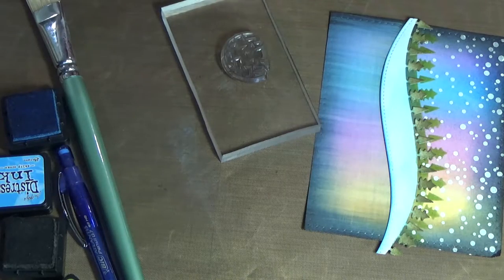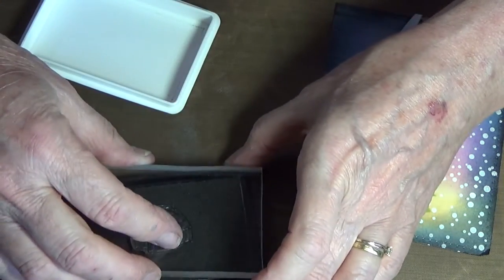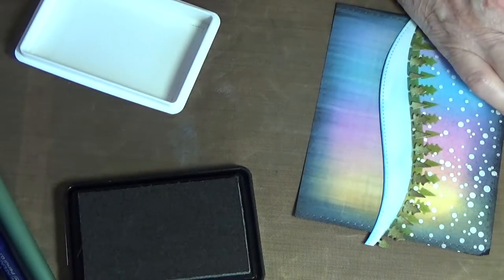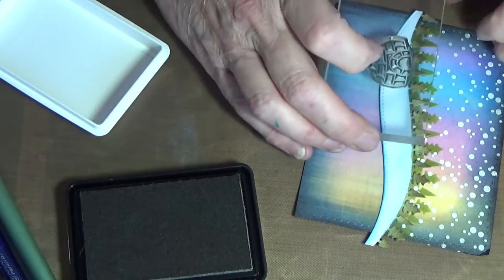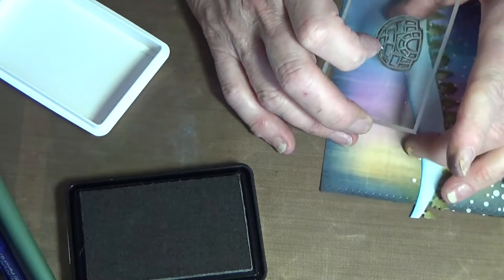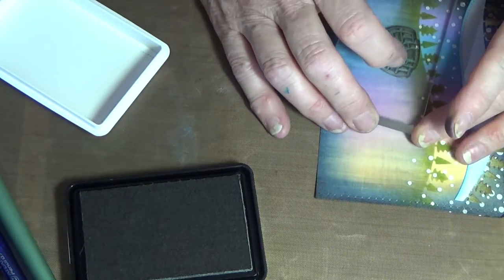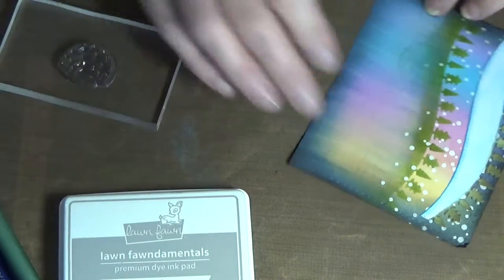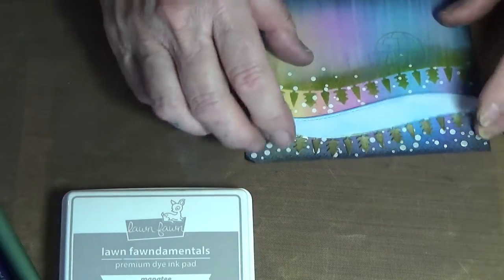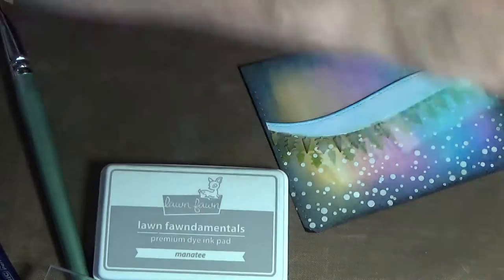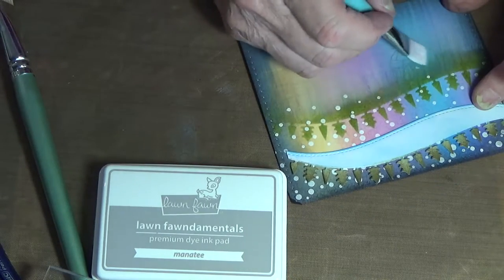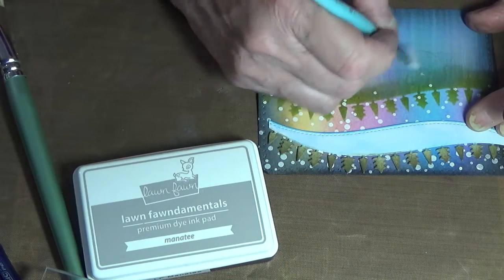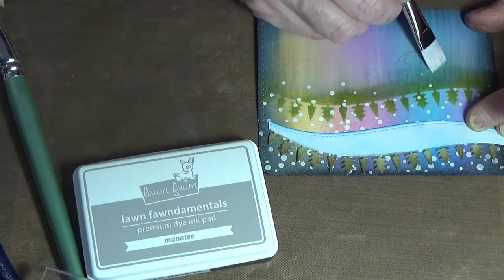Here I'm using the igloo from the Lawn Fawn Snow Cool stamp set to put a reflection into the water. I think I might have put it just a little bit too high up for the scene. When I made the first card, I didn't put the reflection of the igloo on it and managed to put the trees a bit lower, but it really doesn't matter.